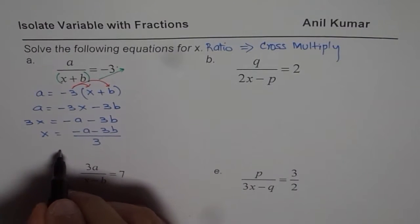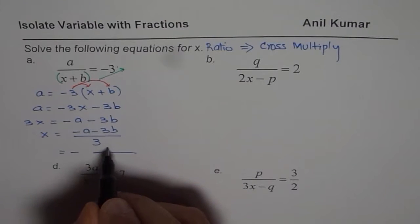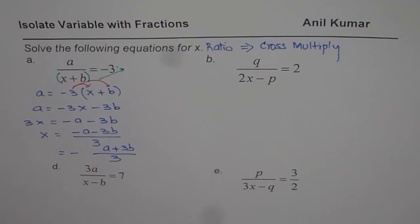At times, you can also write this as negative, since both are negative, as a common factor. And you can write this as a plus 3b divided by 3. So that is how you could do it.